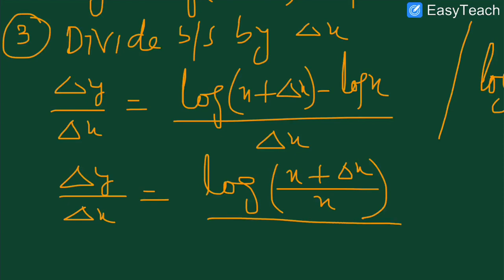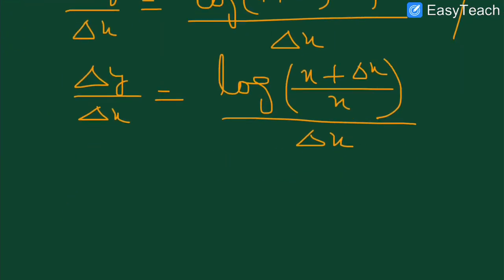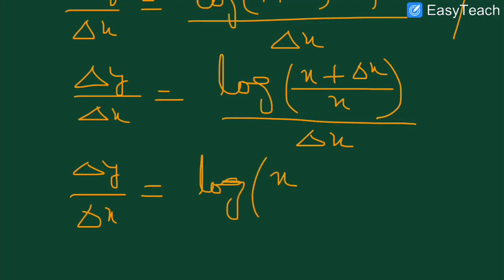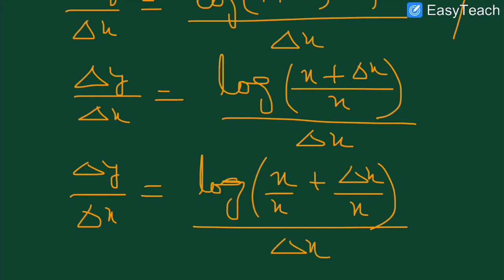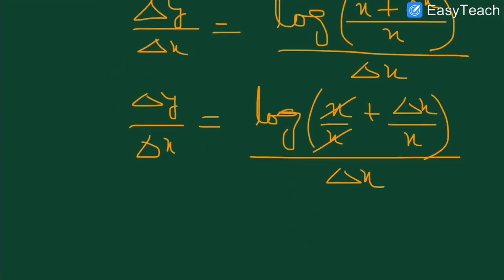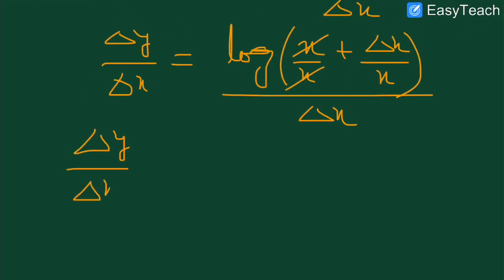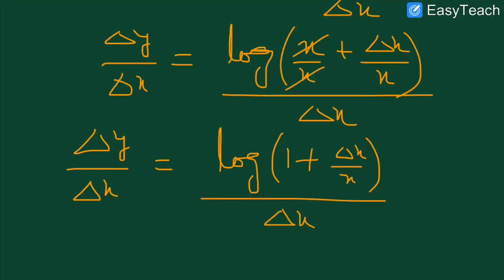So in the denominator we have delta x. We can rewrite this: delta y by delta x is equal to log of (x plus delta x) divided by x, whole divided by delta x. Separating x plus delta x over x gives us 1 plus delta x over x. So delta y by delta x is equal to log of (1 plus delta x divided by x), whole divided by delta x.